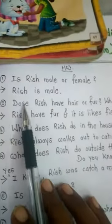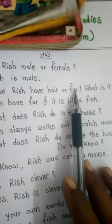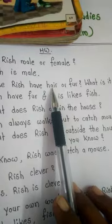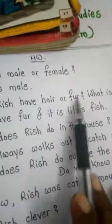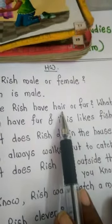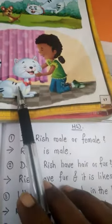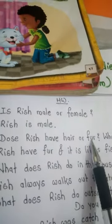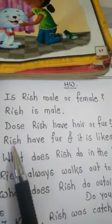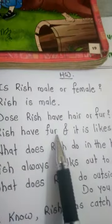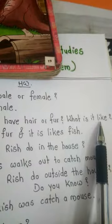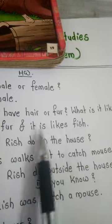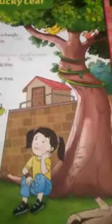Next question is: does Rich have hair or fur? What is it like? It means, Rish ke body par fur hai ya hair hai. Jo cat ke body par chhoti chhoti baal hoti hai, unko hair nahi bolte — fur bolte hai. So, you have to write: Rish has fur. And what is it like? It likes fish.